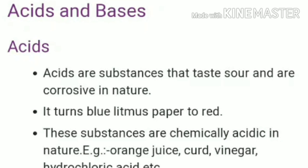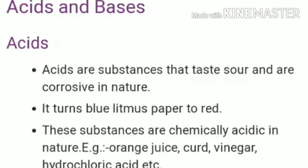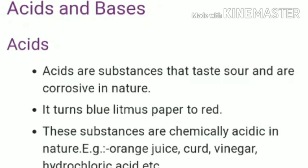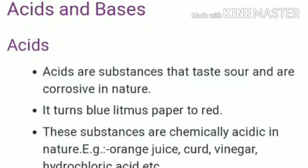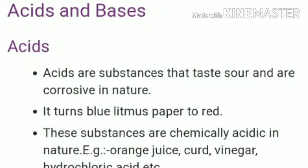Acids turn blue litmus paper into red. Koi bhi substance acid hoga toh blue litmus paper us ke under dip kareenge toh red color mein change ho jata hai. Examples of acids are orange juice, vinegar, curd, lemon juice, hydrochloric acid, nitric acid. Natural acids include orange juice and lemon juice.